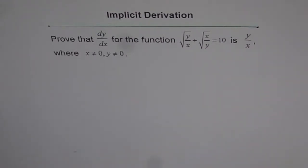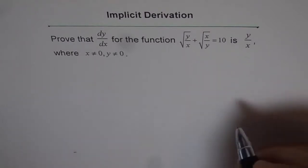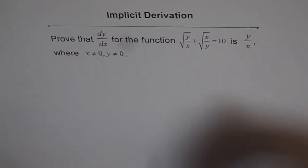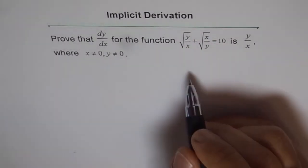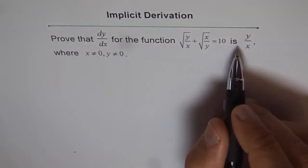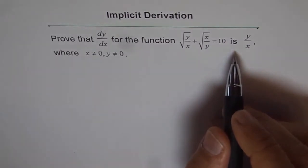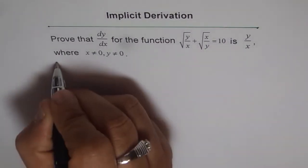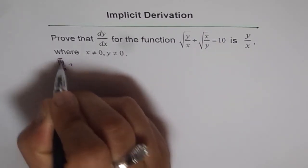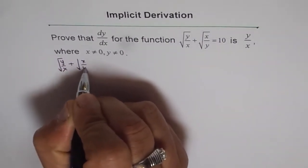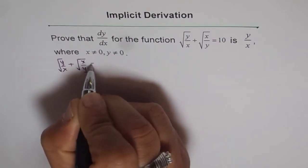Now, how to do this question? I am showing you one approach which may not be the best, but that gives us the answer. My approach here is to first simplify this particular function and then continue. So the question is √(y/x) + √(x/y) = 10.